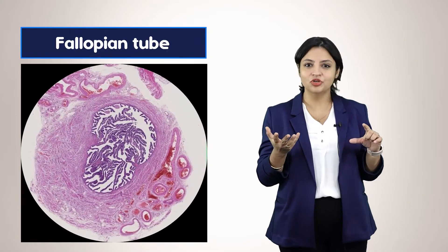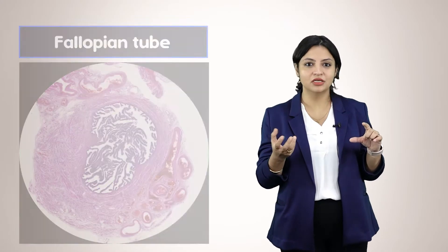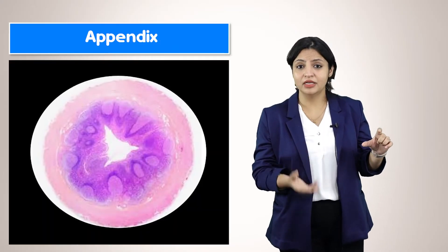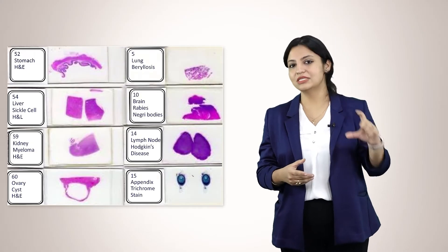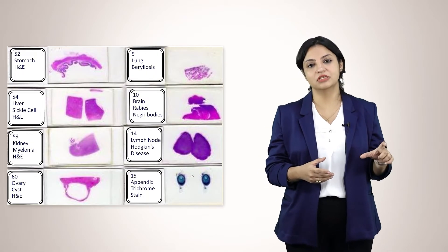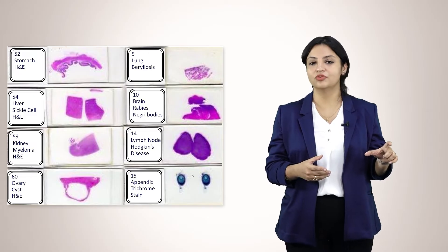It could be a fallopian tube, it could be an artery, it could be a vein. It can be a luminal structure, like even the appendix. Whenever you are holding any slide, you should know what a section looks like — that is the first and basic thing.